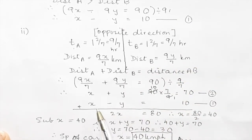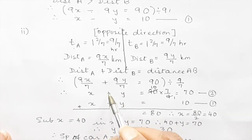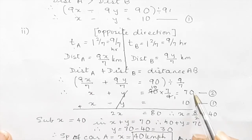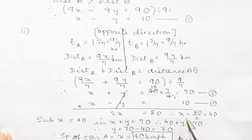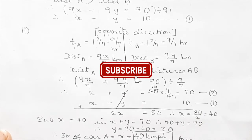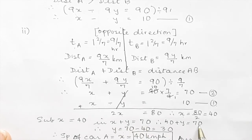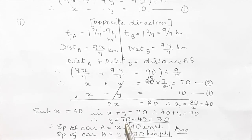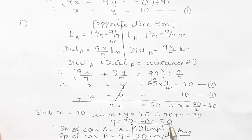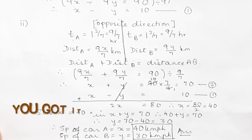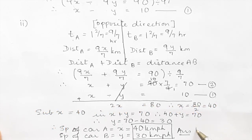Equation 1 is x minus y equals 10 and equation 2 is x plus y equals 70. Adding both equations, y cancels and we get 2x equals 80, giving x equals 40. Substituting x equals 40 into equation 2: 40 plus y equals 70, so y equals 30. Therefore, the speed of car A is 40 km/h and the speed of car B is 30 km/h.